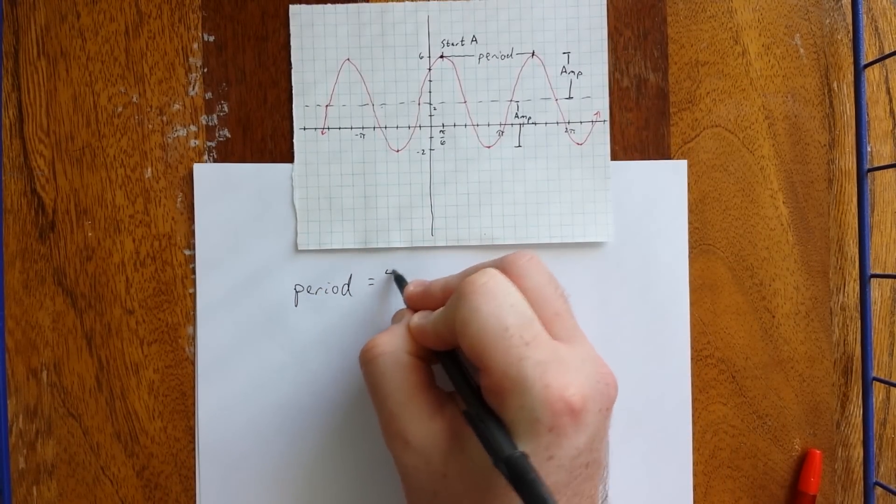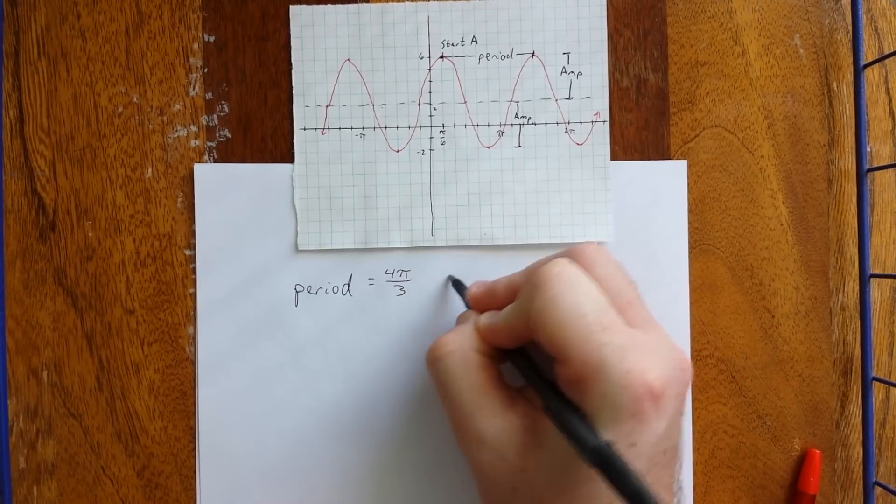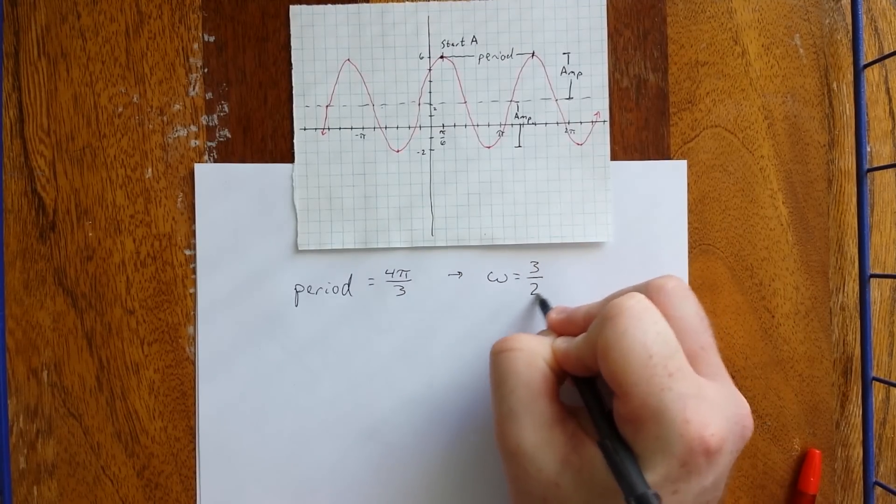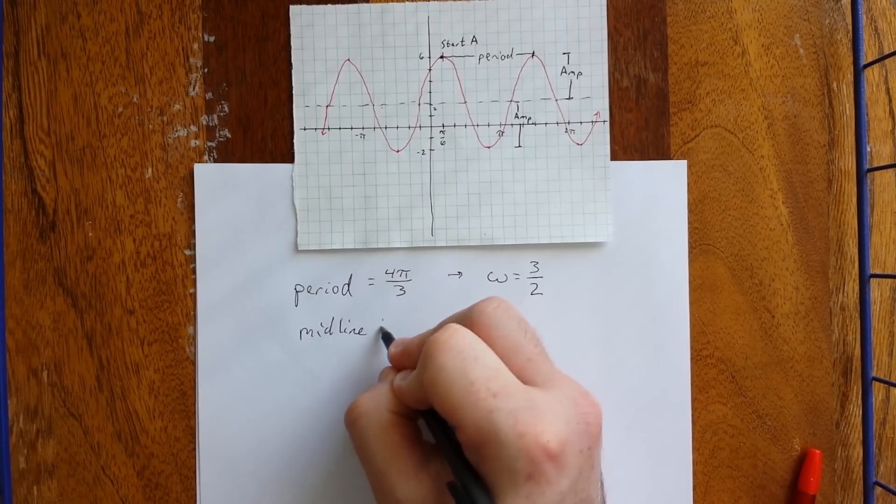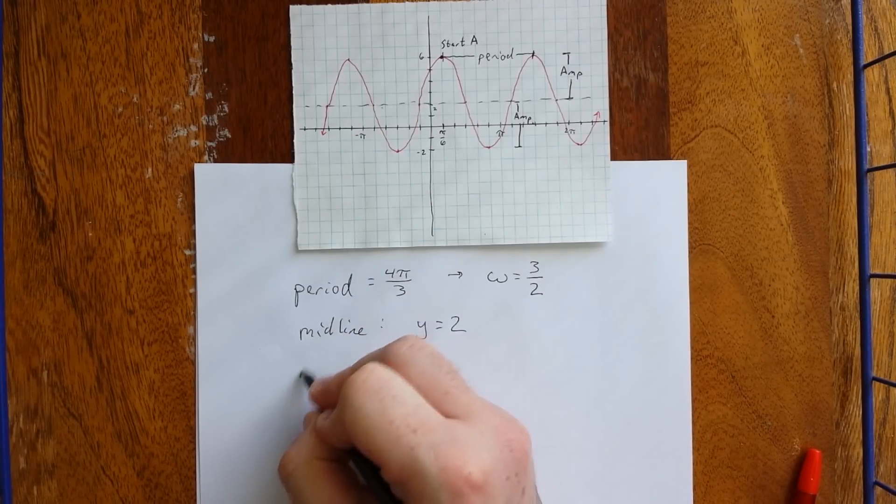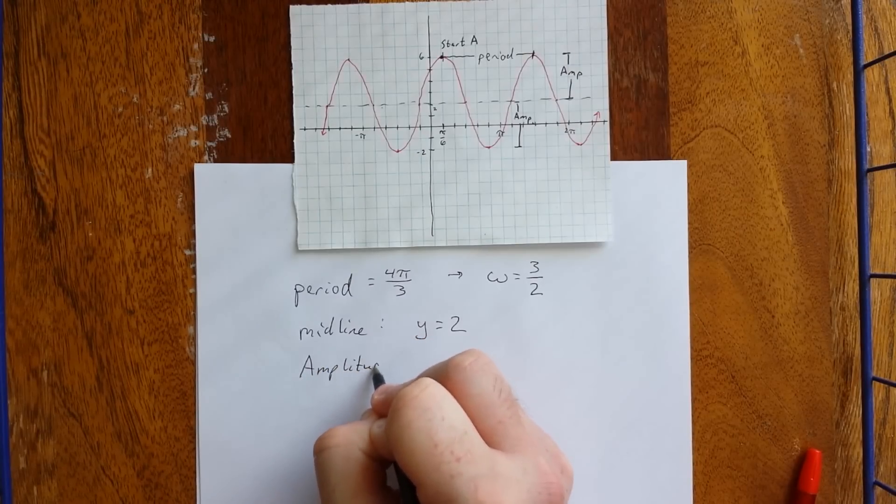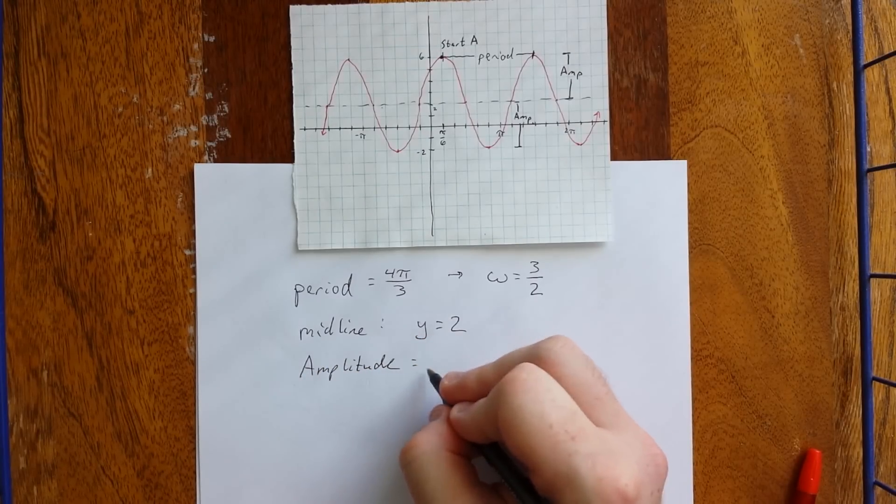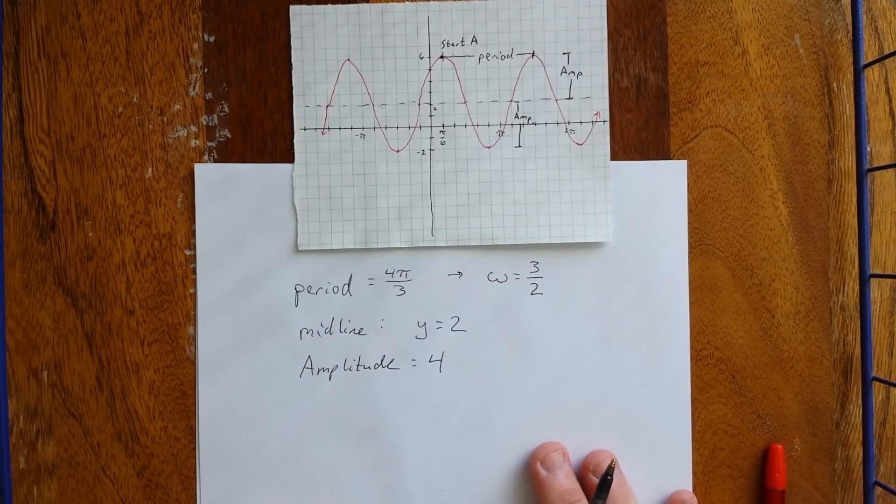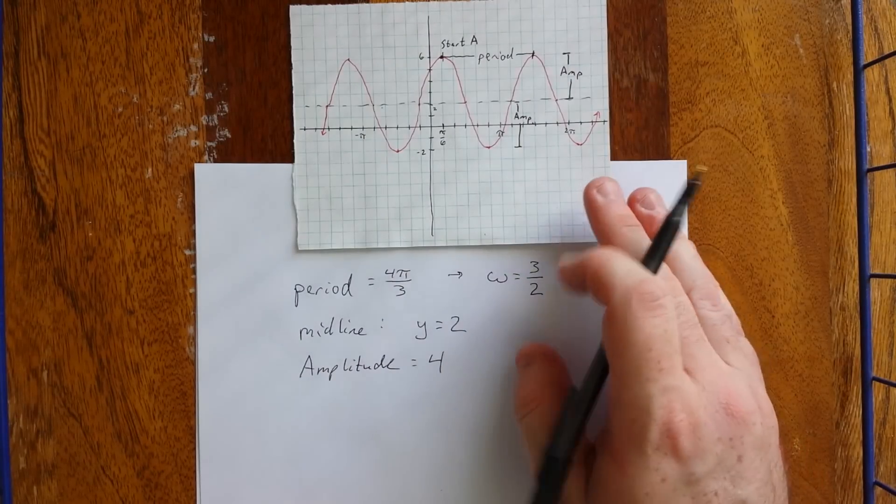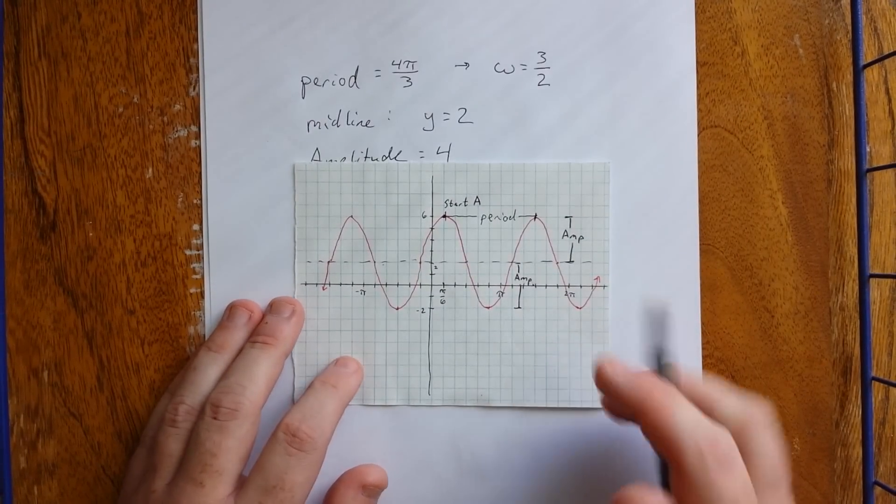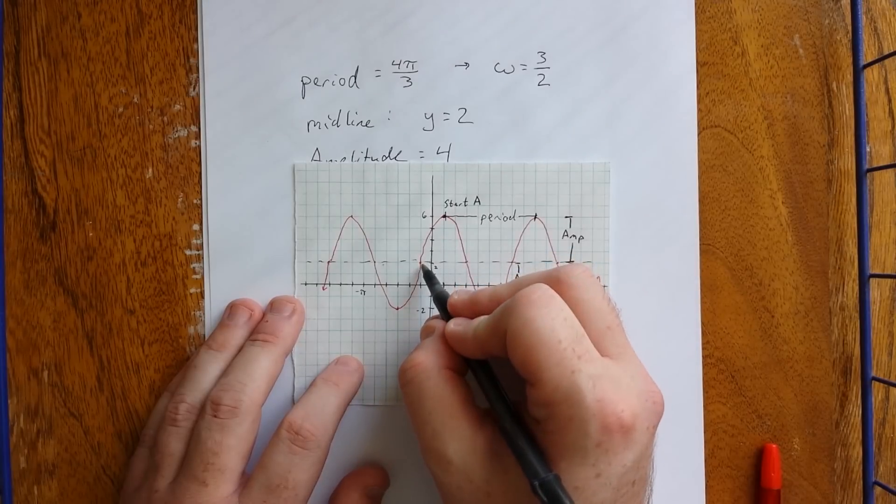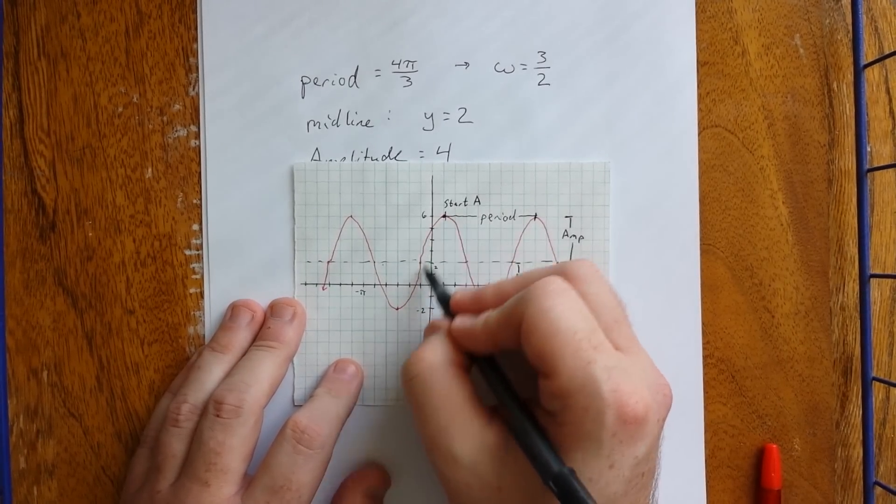So, the period is still going to be equal to 4 pi over 3. Which means that omega is still going to be 3 halves. The midline is still y equals 2. The amplitude is still going to be equal to 4. The only thing that's going to change now is our starting point. Since we're choosing a sine, we're going to start at the midline. Now, a point that I see on the midline. If we were to select this starting point, we could use a sine graph. And because it's increasing through here, we could use a positive value for A.